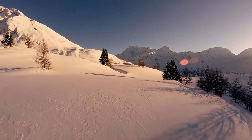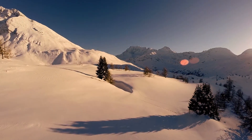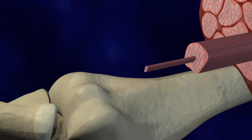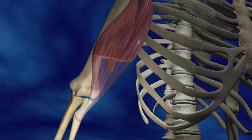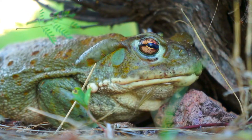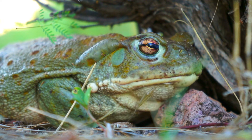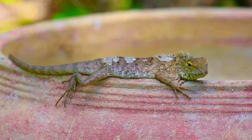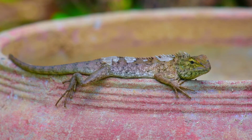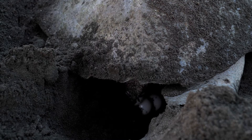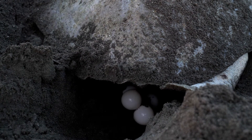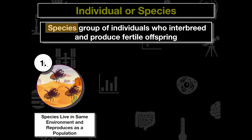This hierarchy — individual, population, community, ecosystem, biosphere — is important in ecology because it influences what we study. You probably learned that a cell is the basic unit of life, and biology describes cells, tissues, organs, and organ systems as the four levels of organization. For an ecologist, the most basic level of study is the individual organism, and a species is individuals who interbreed and produce fertile offspring.